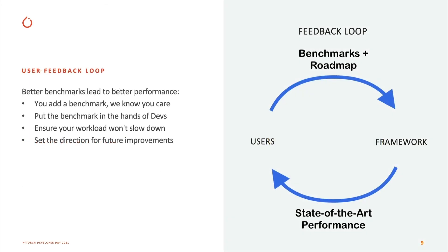This is actually the central element of how to build a strong performance ecosystem. Proxies are critical — we have to know that when we are improving a benchmark, it's improving the actual user who's using it, and that someone's life is actually getting better. The number one way to know it's worth improving a benchmark is to have been given that benchmark by someone who says, 'This is a workload I care about. I run this every day,' and they actually give it to us and put it in the hands of PyTorch developers everywhere.